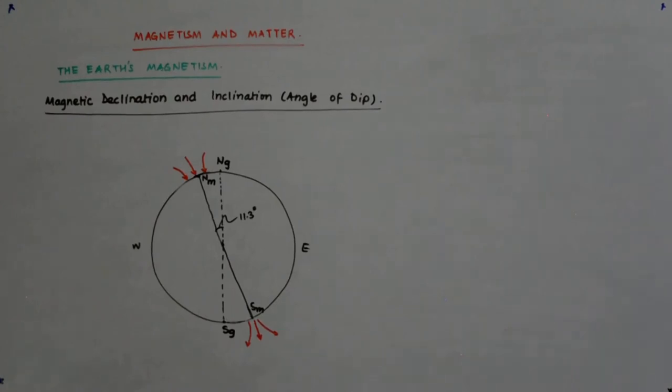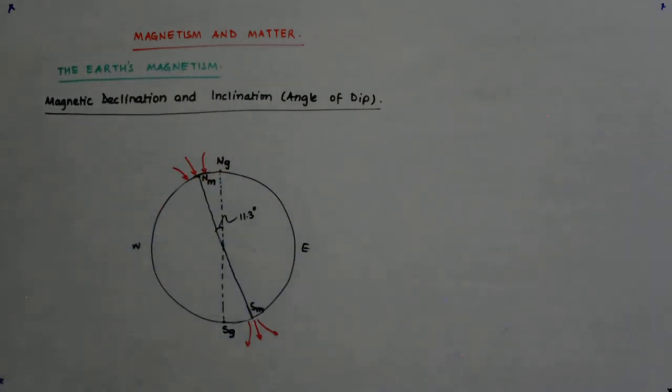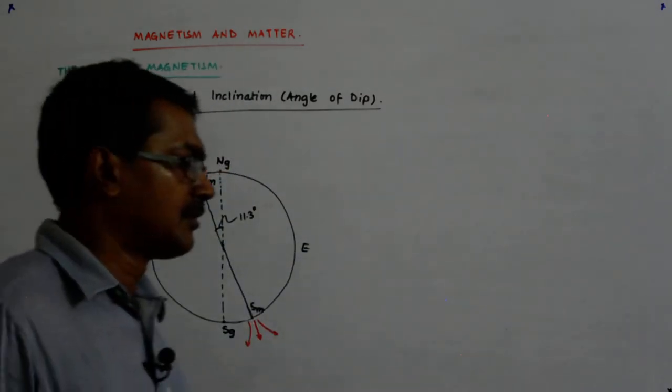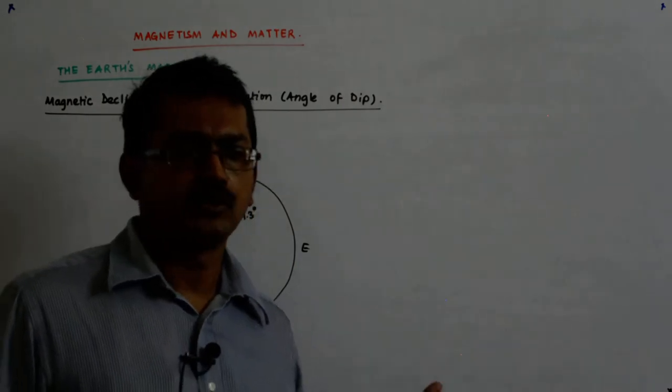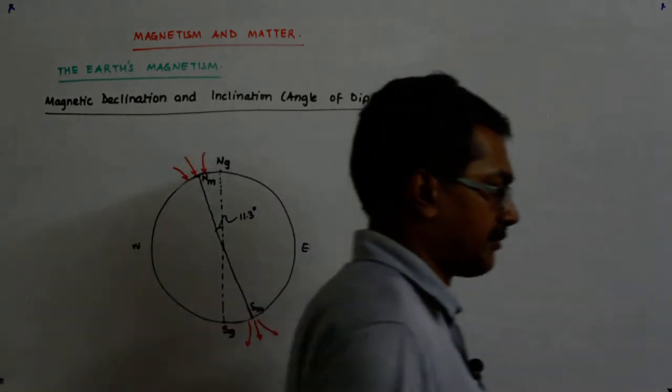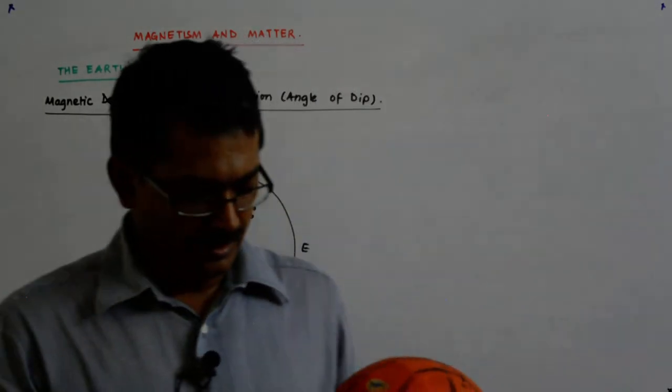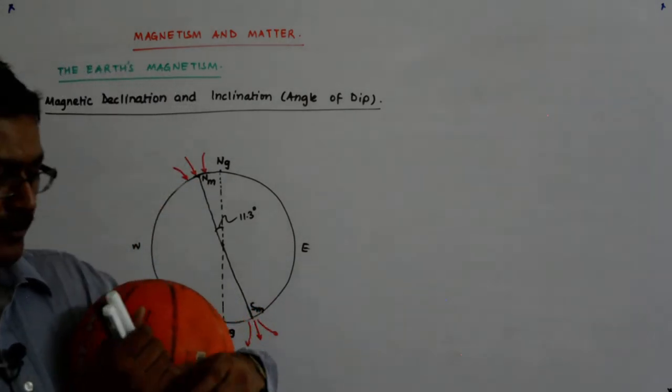Now that we understand the angle of dip and the declination, we can do a lot of things with it. So again I bring this ball back. Now what happens? Suppose at a point I'm able to measure my B_E, and this is my northern hemisphere.